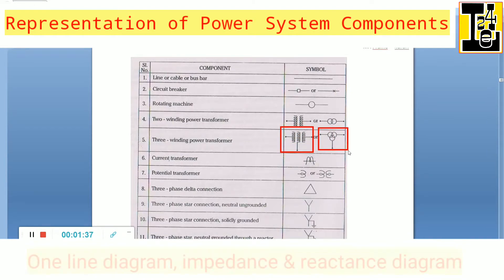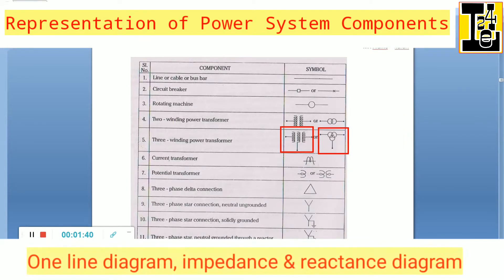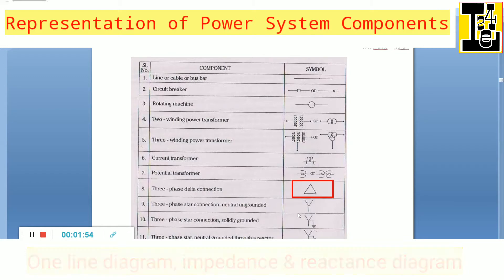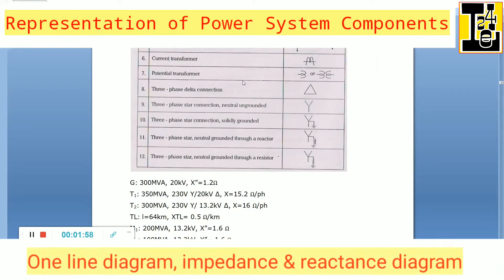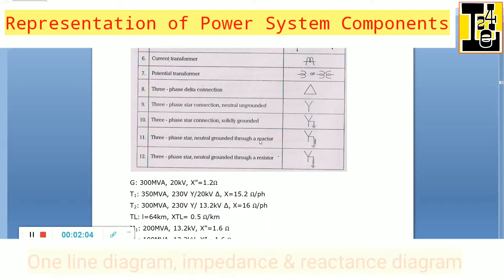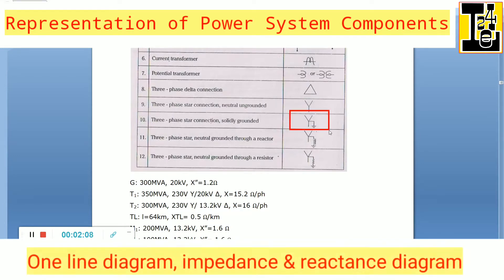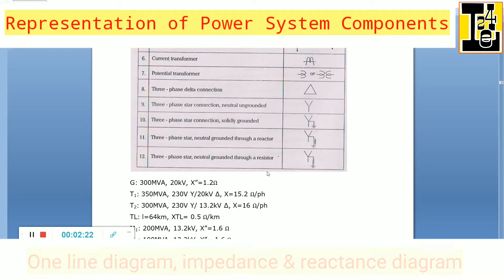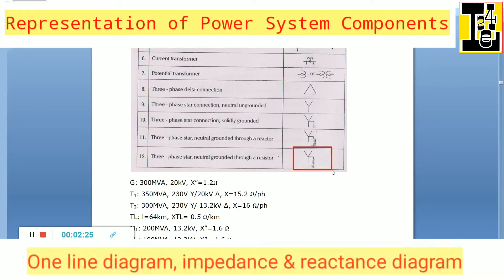A three winding transformer can be shown like this or in another representation. The current transformer is represented like this. The potential transformer is symbolically represented in this way. A three phase delta connection is represented in this way. A three phase star connection with neutral ungrounded is shown like this. A three phase star connected solidly grounded neutral is like this. A three phase star connection neutral grounded via a reactor is shown like this, and a three phase star neutral grounded through a resistor is represented like this.